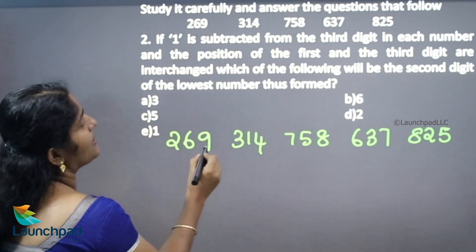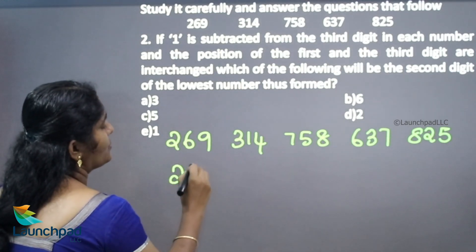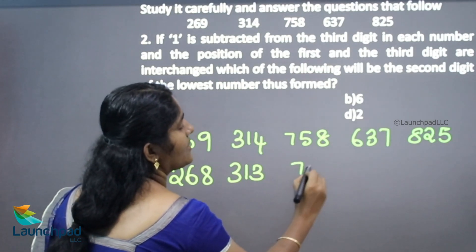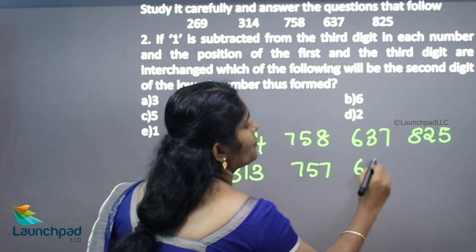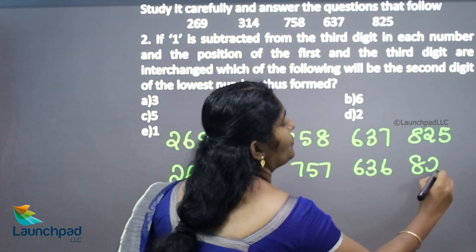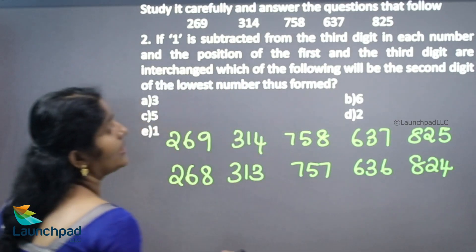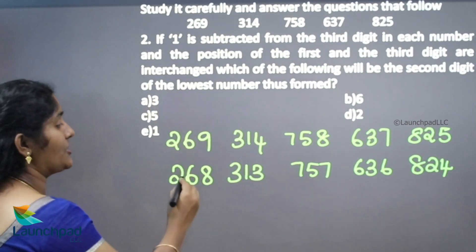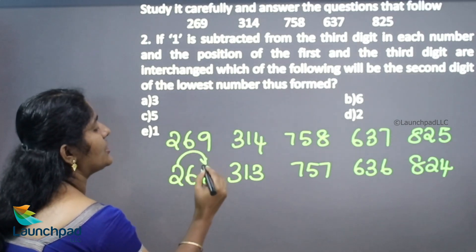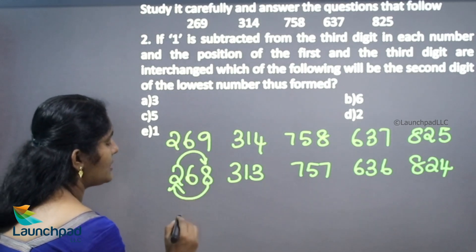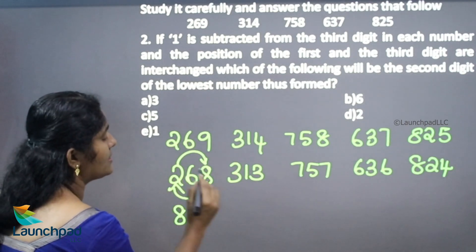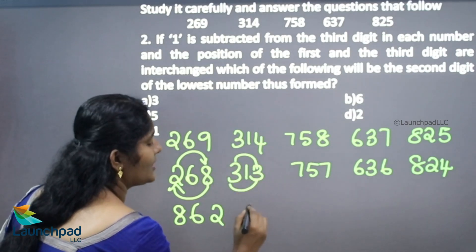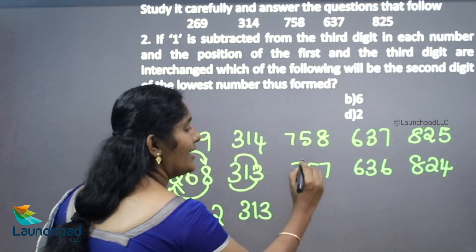Subtracting 1 from the third digit: 269 becomes 268, 314 becomes 313, 758 becomes 757, 637 becomes 636, and 825 becomes 824. Now we interchange the position of the first and third digit: 268 becomes 862, 313 stays 313, 757 stays 757, 636 stays 636, and 824 becomes 428.